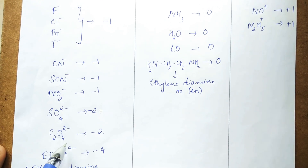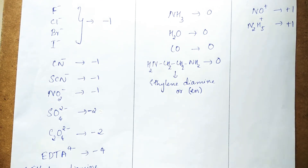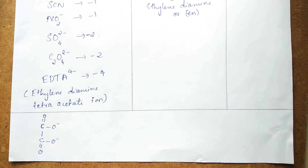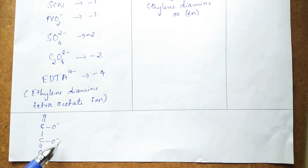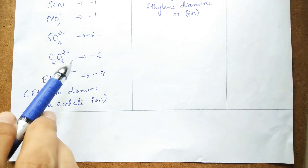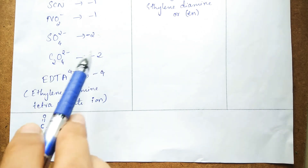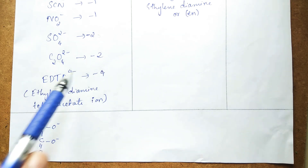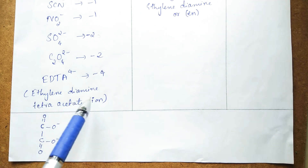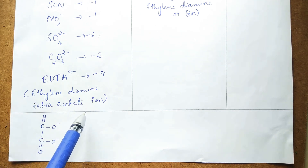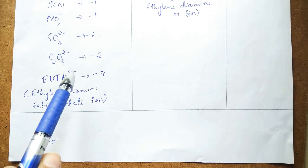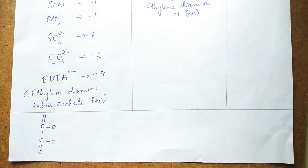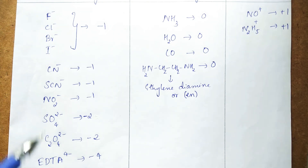Then we have sulfate with a minus two charge, and oxalate with minus two — its structure is C₂O₄²⁻ with two negative charges. One more anionic ligand is EDTA⁴⁻, which is ethylene diamine tetra-acetate anion. As the formula itself indicates, its charge is minus four. These are some very commonly found anionic ligands.